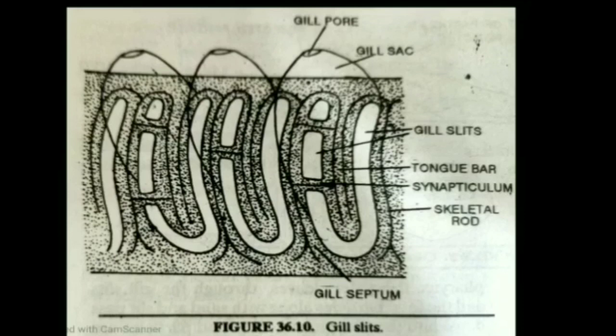Another important feature: gill septa and gill slits are supported by skeletal rods which appear M-shaped. The center of the M is in the gill septum, and the side arms are present on the gill slits of each side. The middle ray of each M-shaped rod is bifurcated ventrally and lies in the gill septum, while the outer rays lie in neighboring tongue bars. This presence of skeletal rods is another point of resemblance between Balanoglossus and Branchiostoma.